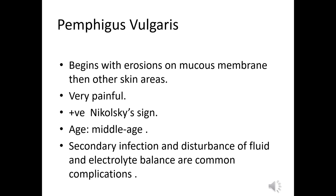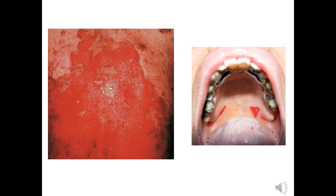Pemphigus vulgaris begins as erosions of the mucous membrane, followed by skin lesions. Lesions are painful rather than itchy. Nikolsky's sign is positive. The age affected is middle age. Complications include secondary infections and disturbance in fluid and electrolyte balance due to widespread lesions — it resembles cases of burn where we may face electrolyte and fluid imbalance. These photos show the appearance of oral cavity erosions in pemphigus vulgaris.